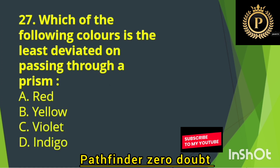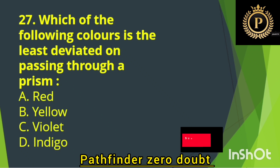Which of the colors is least deviated on passing through a prism? — Option A: Red.